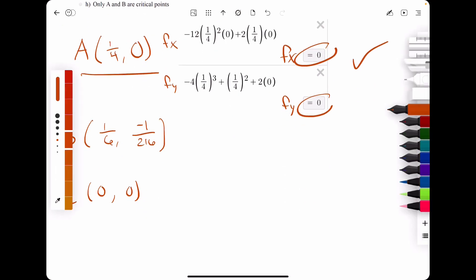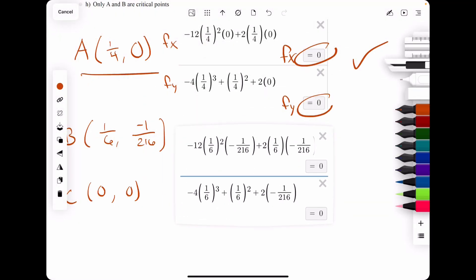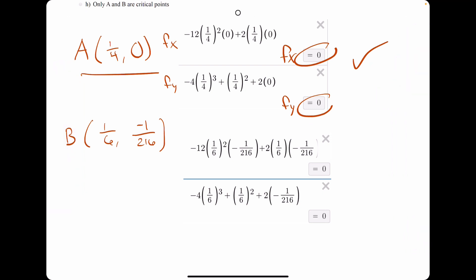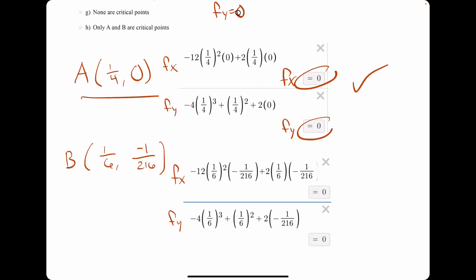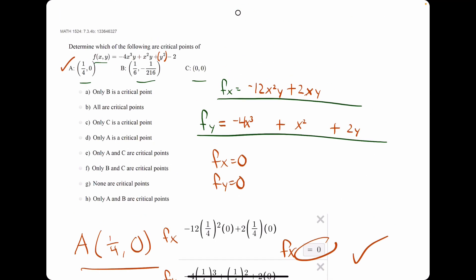So far, so good. Then for option B, we had 1 sixth and negative 1 over 216, which means we plugged those in for fx and fy, and it turns out that we got 0 for both of those, which indicates that B is a critical point.